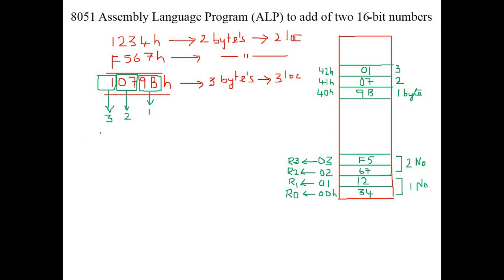Now we have defined the numbers, added them, and seen how to store them in memory. We will see what is the logic behind this addition and what operations need to be performed. From the memory locations, we take the values into registers R0, R1, R2, and R3. We are copying the first number into registers R1 and R0.